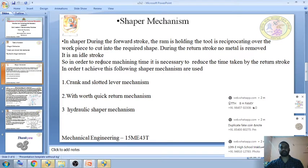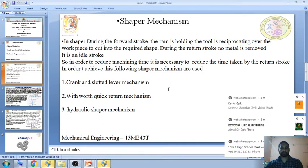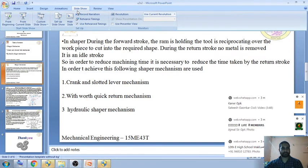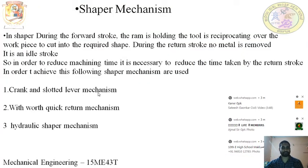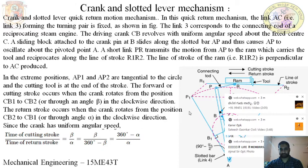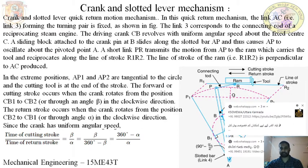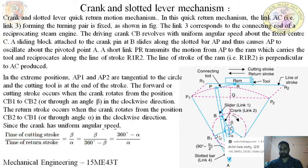The shaper mechanism for achieving the quick return motion is the crank and slotted lever mechanism, in which the forward stroke is taken at a higher angle beta and the return action takes place with a lower angle alpha. Beta is always greater than alpha, meaning the forward stroke takes more time compared to the return stroke.